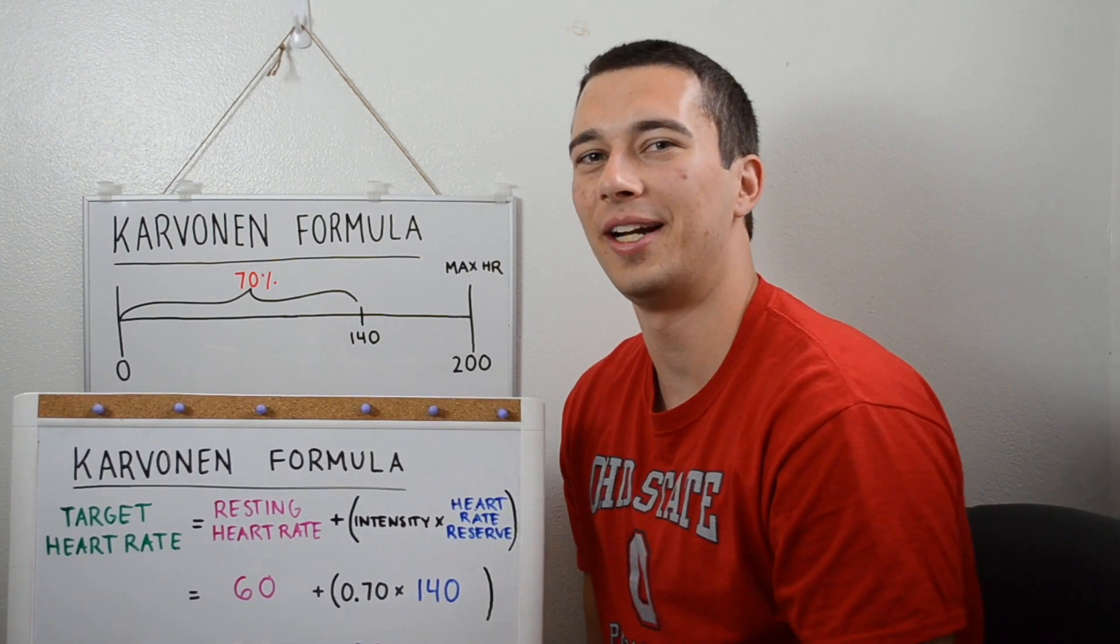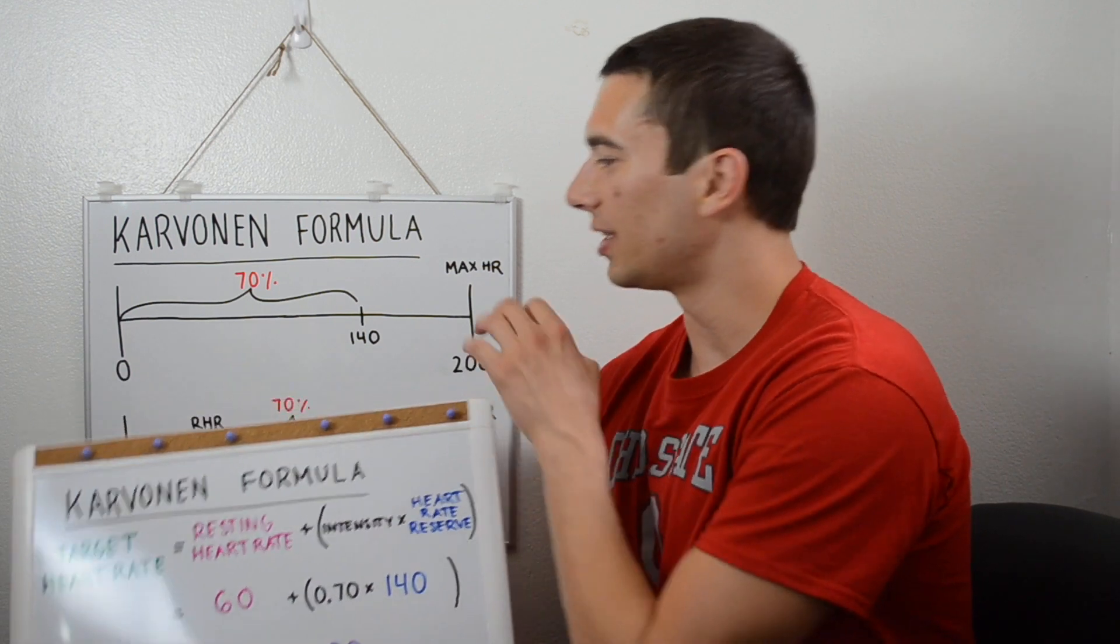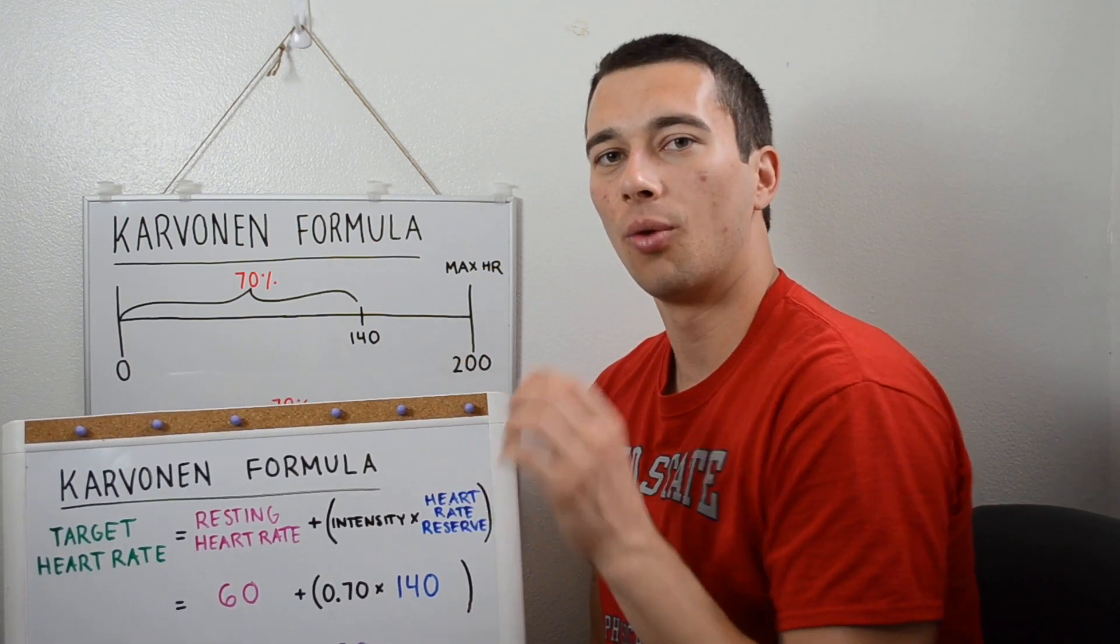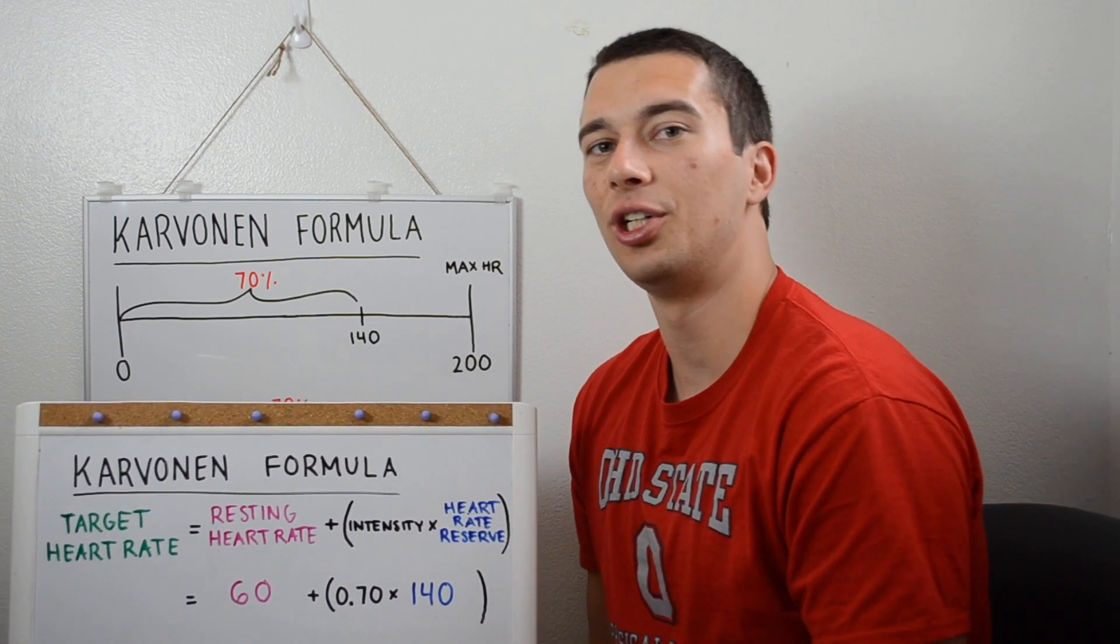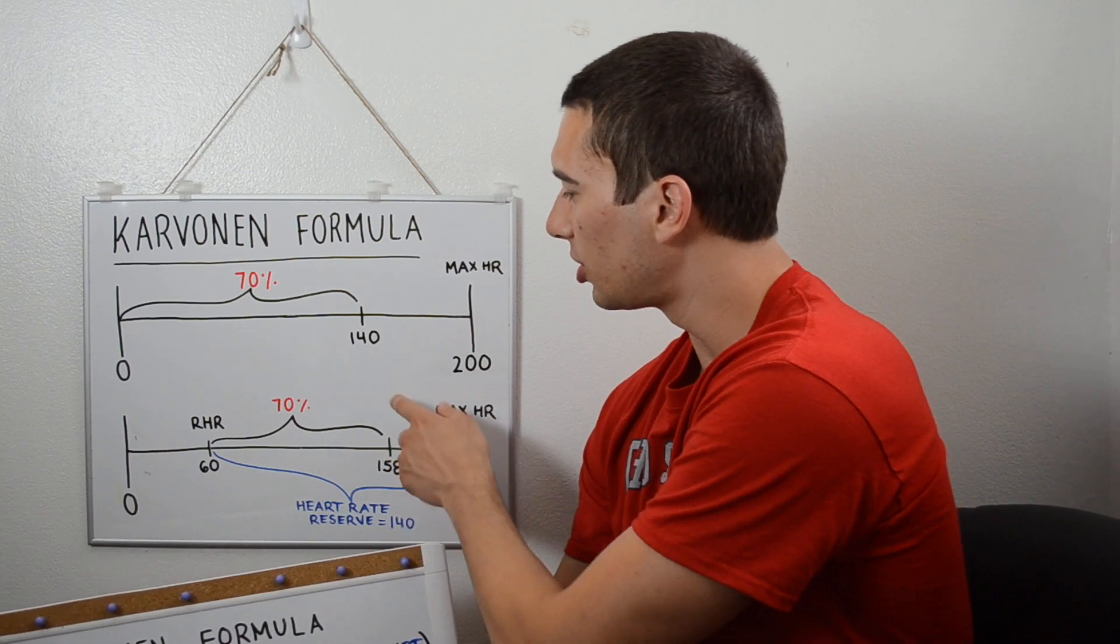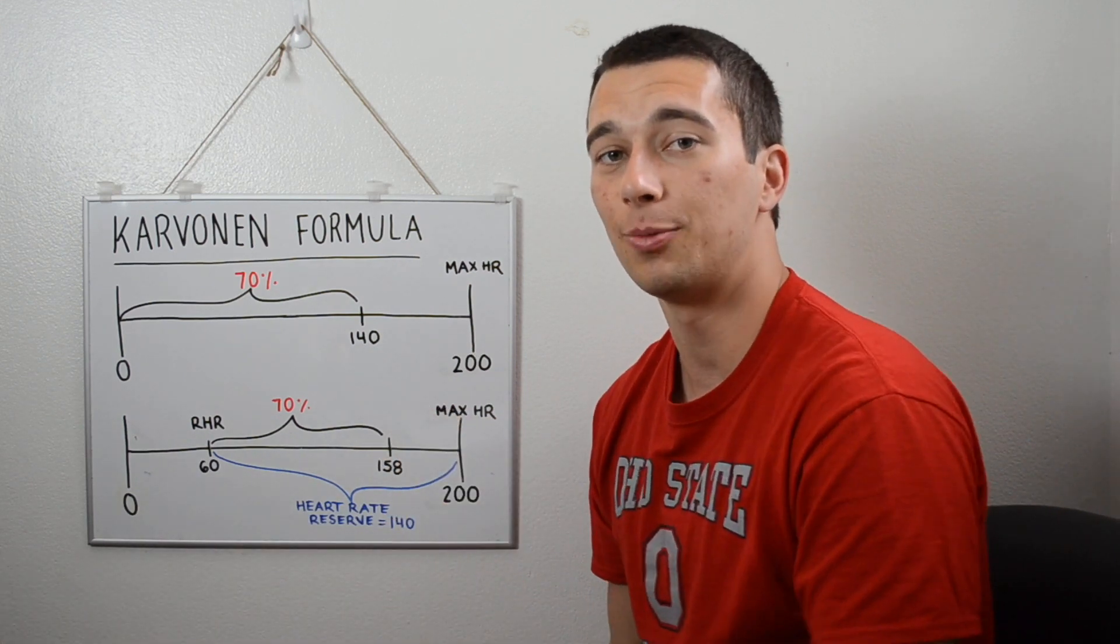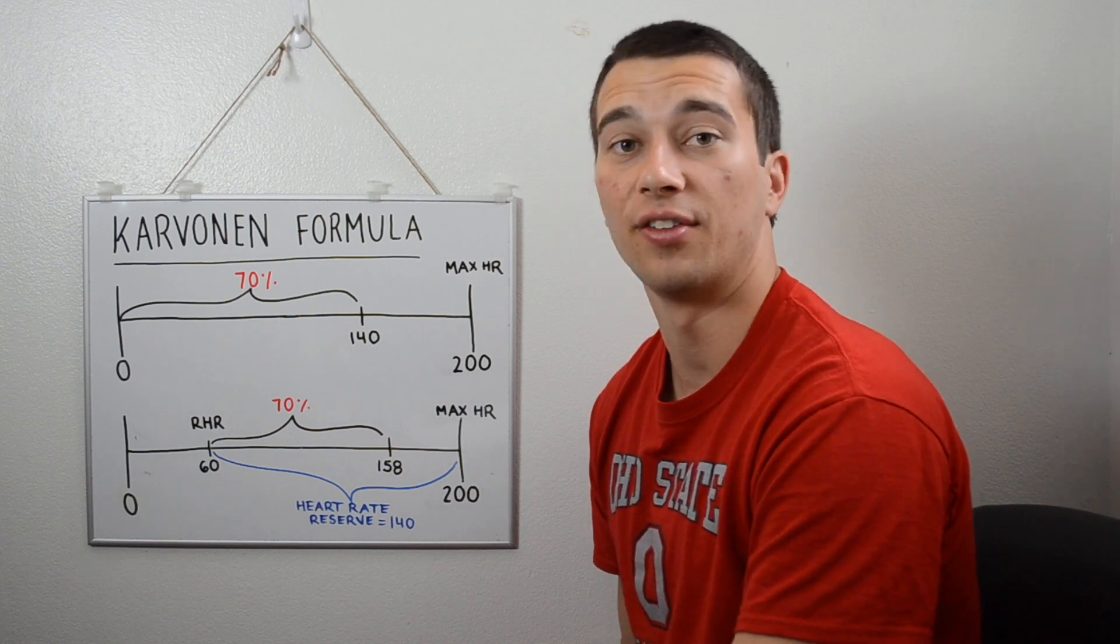All right, so if that made sense to you, go ahead and hit the like button. If you need to, you can always replay it back. One reason for assigning target heart rate is so that we can work in a specific heart rate zone and be efficient in whatever adaptation we're chasing. So we might have someone work in a 70% heart rate zone, like zone three where they're working at a race pace and training for a 5K or something like that.